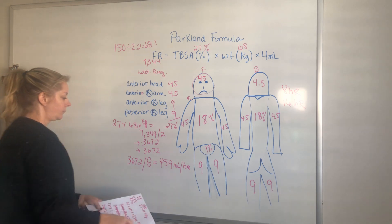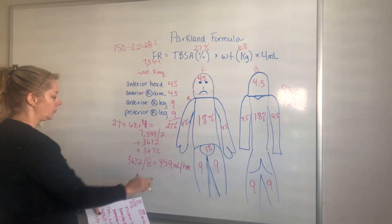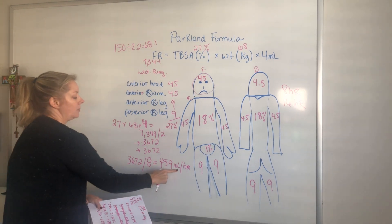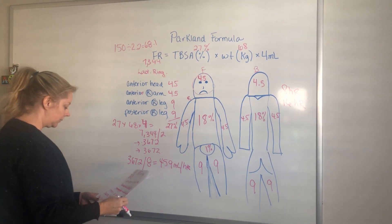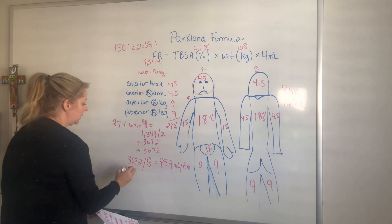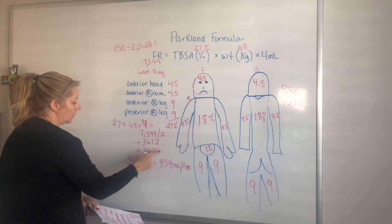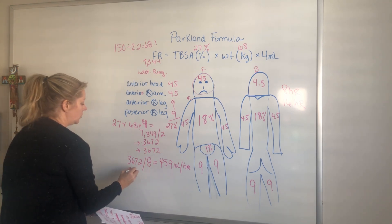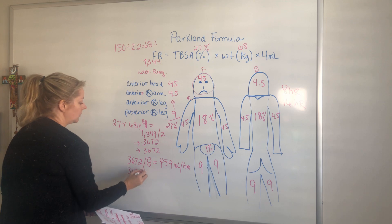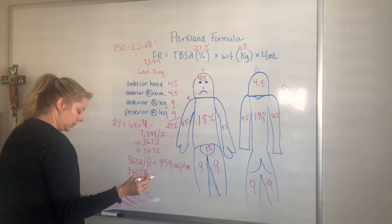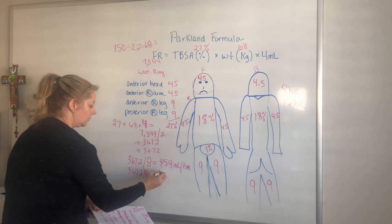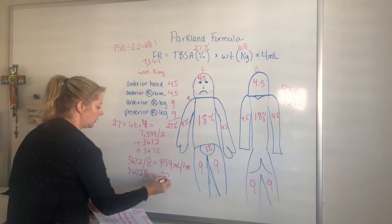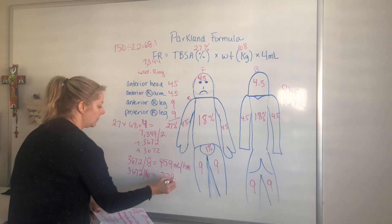For the next 16 hours, we take 3,672 divided by 16, which equals 229 mL per hour. That's your pump rate for the remaining 16 hours.